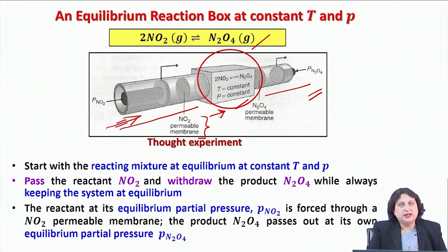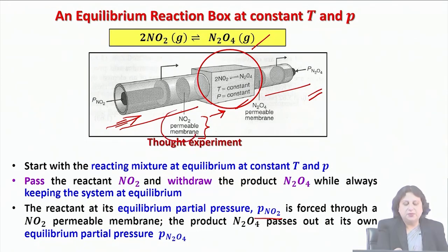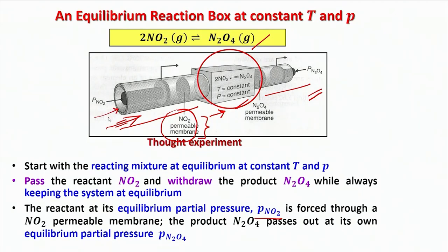I will also make sure that the reactant will always be at its equilibrium partial pressure P_NO2, and it is at this partial pressure that it will be forced through this nitrogen dioxide permeable membrane. That means while forcing, I am going to use a piston on this side to force the nitrogen dioxide gas through the nitrogen dioxide permeable membrane, so that the desired amount of gas can enter the reaction box from the NO2 side.